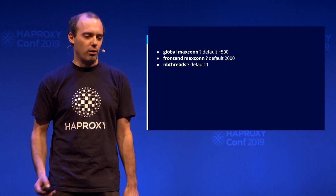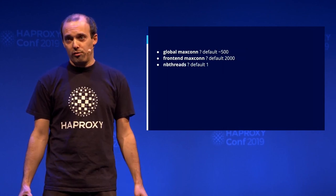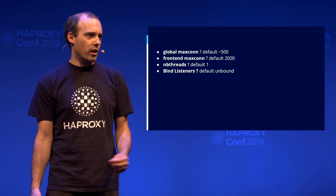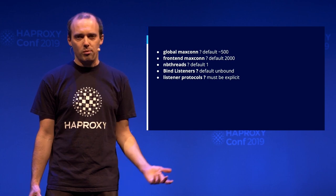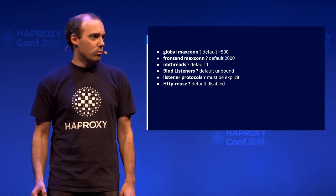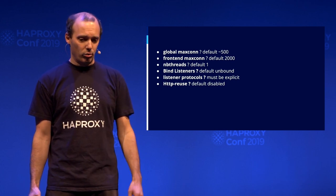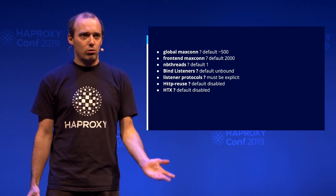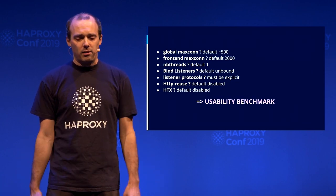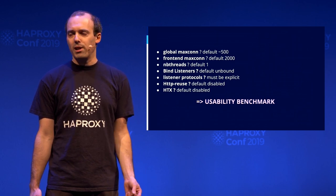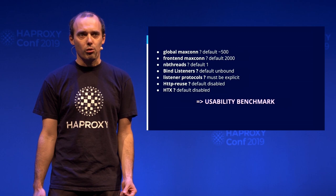In order to run a test correctly, you have a lot of settings to set: Global Maxconn, Frontend Maxconn, number of threads (which defaults to one), binding listeners to threads so load is properly spread, explicitly specifying protocols if you want HTTP/2, enabling HTTP reuse (which was missing in this test), and enabling HTX if you need to connect to the backend over HTTP/2, like in a gRPC test. So in fact, this guy was really running a usability benchmark more than a performance benchmark. And in my opinion, we failed on this test.